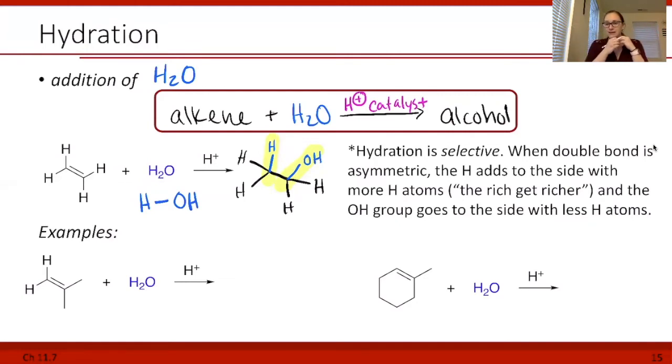But now, what if our alkene is not symmetric? What if one side has a methyl group but one side doesn't? Or in this example, we have two methyl groups on one side of our alkene and hydrogens on the other side. When the chemistry occurs, this is actually a selective process. Hydration is selective when the double bond is asymmetric.